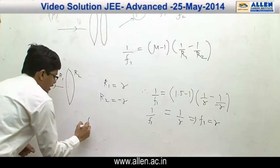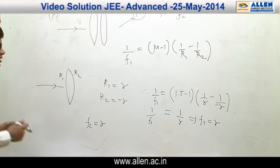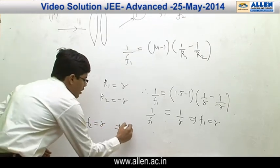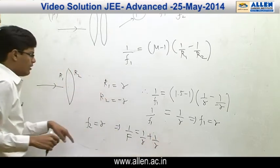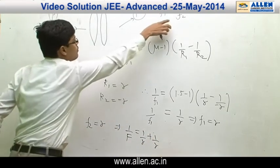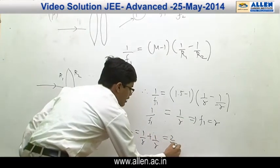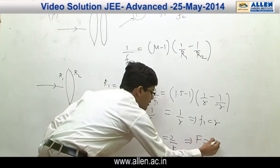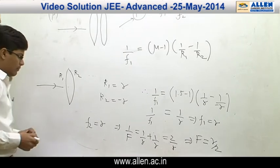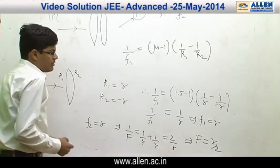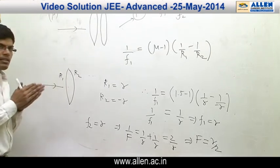Similarly, F2 = R because the second lens is the same as the first lens. That implies 1/F = 1/R + 1/R = 2/R. So the effective focal length is R/2. Therefore, for option P, the effective focal length is R/2, which means P is matching with 2.